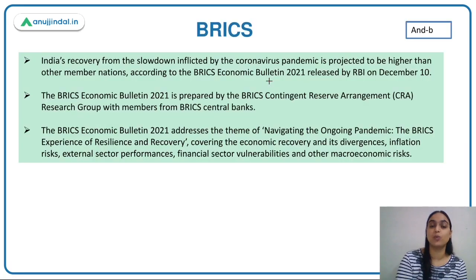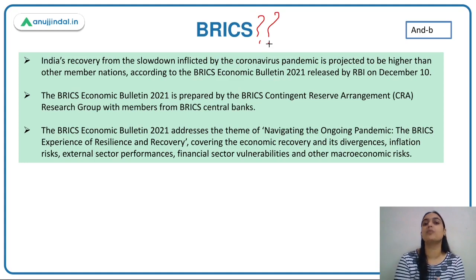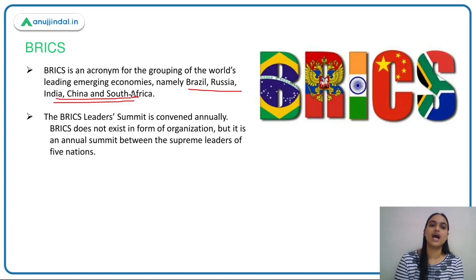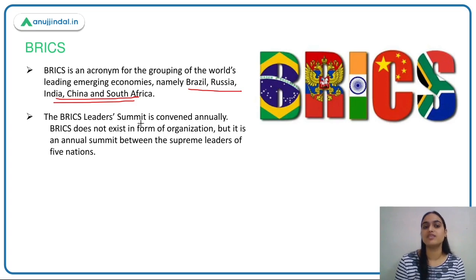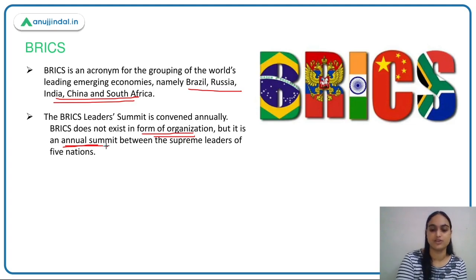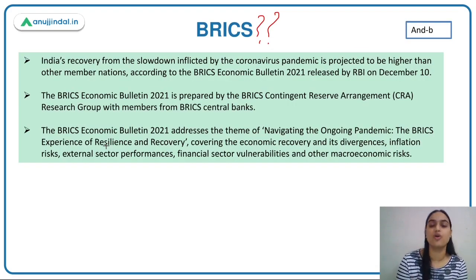BRICS is a grouping of five nations: Brazil, Russia, India, China, and South Africa. Unlike SAARC, there is no formal agreement among these countries as a formal organization. Instead, they cooperate through annual summits where they agree to cooperate on certain terms and conditions. These are some of the leading and emerging economies of the world.